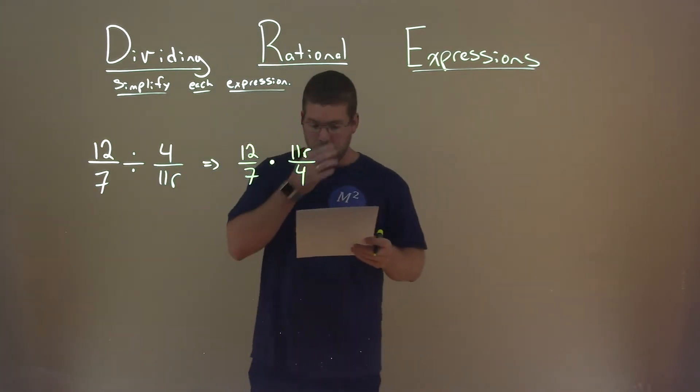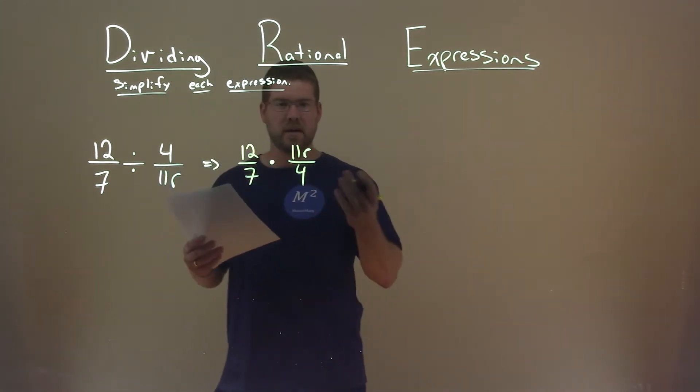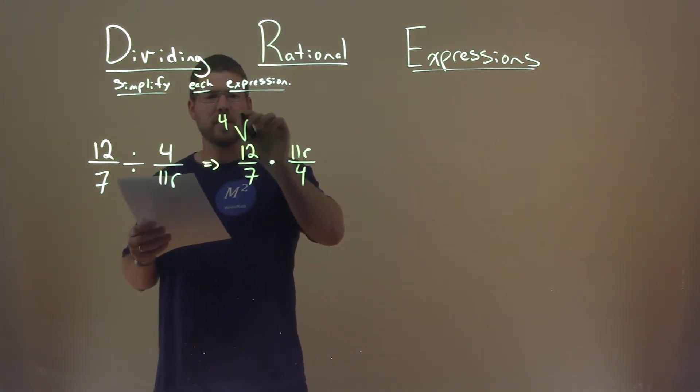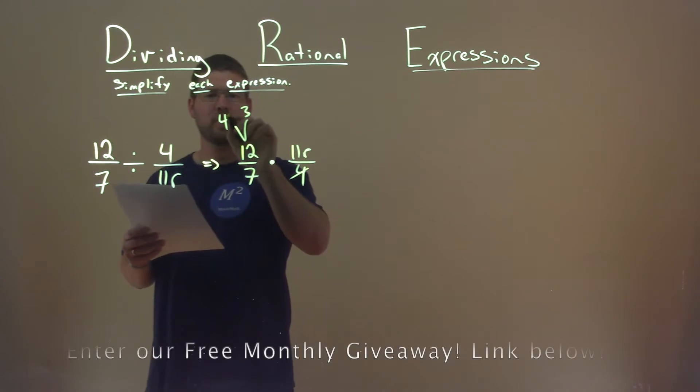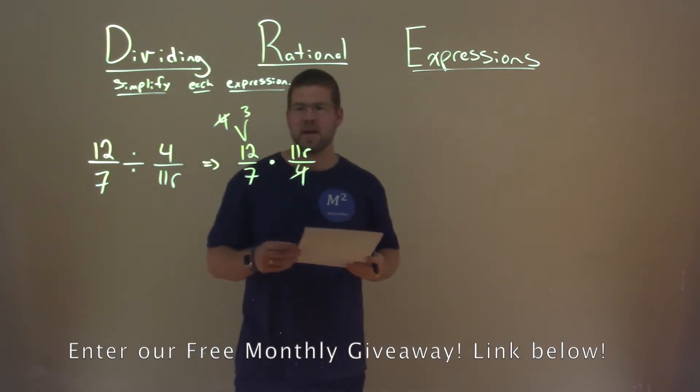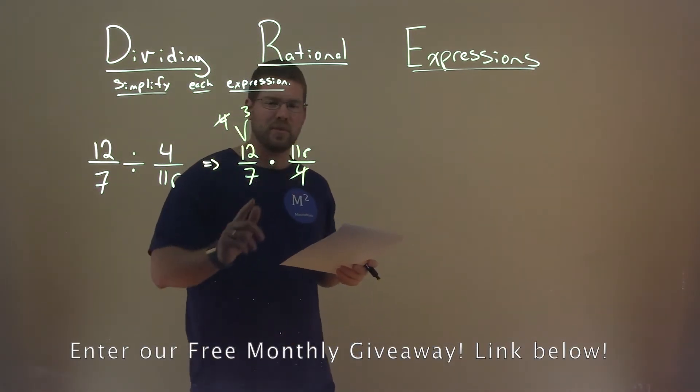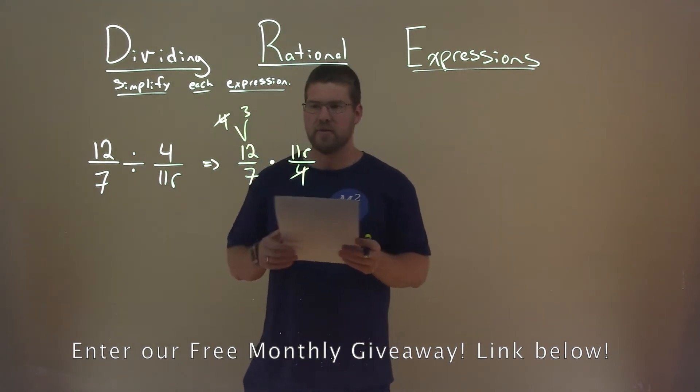So now, what we want to do is see what we can break down and eliminate. 12 is 4 times 3, and now I can see 4 in this denominator and 4 in this numerator cancel each other out. Nothing else seems to easily cancel each other out.